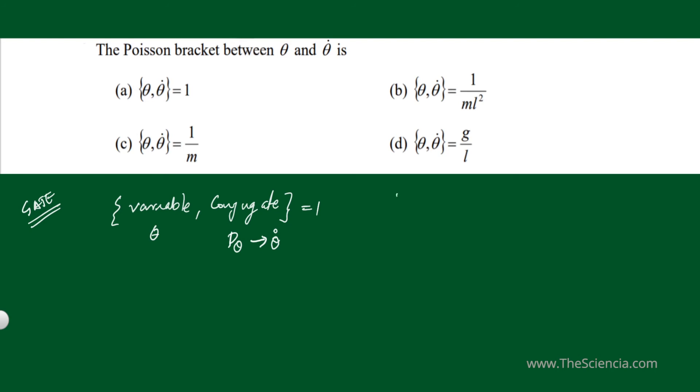Consider the case of a simple pendulum. For a simple pendulum, we have the Lagrangian equal to 1/2 M L squared theta dot squared plus M g L cos theta.